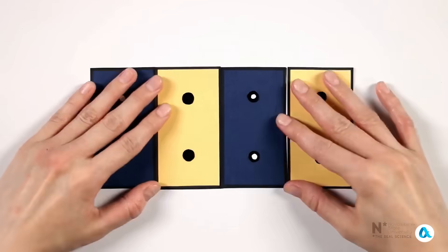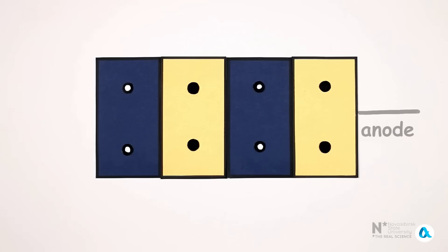The basis of a thyristor is a layered semiconductor crystal, in which from the anode to the cathode, a hole region, an electron region, another hole region, and another electron region alternates sequentially.